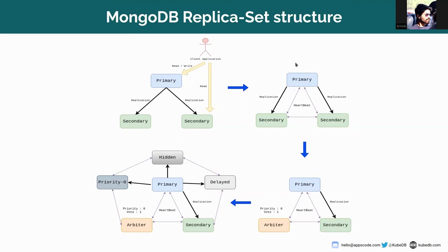In the second picture, you can see a replica set structure from the internal point of view, where the heartbeat is being used to know whether the other nodes are live or not.